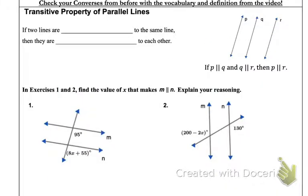Our last property here is the transitive property of parallel lines, and it tells us if two lines are parallel to the same line, then they're going to be parallel to each other. So if P and Q are parallel, and Q and R are parallel, then that means that P has to be parallel to R.